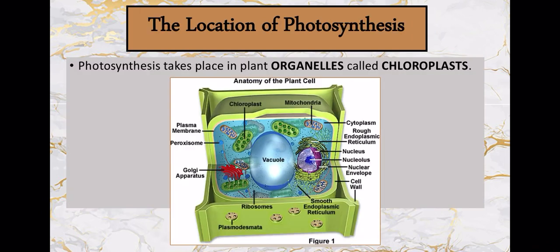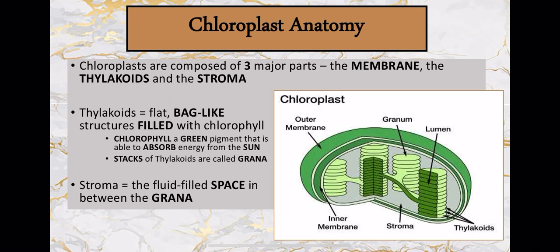Photosynthesis happens in organelles called chloroplasts — little pillows and pockets of chlorophyll and pigments that absorb solar energy and use it to generate glucose. The inside of a chloroplast has two membranes, an outer and an inner membrane. In between is the intermembrane space, and it is filled with stacks of pigment-filled disks called thylakoids — flat bags full of chlorophyll and other solar-absorbing pigments. Stack those up and it creates a granum or grana. The inside space is called the lumen, and surrounding it is a jelly-like fluid space called the stroma.